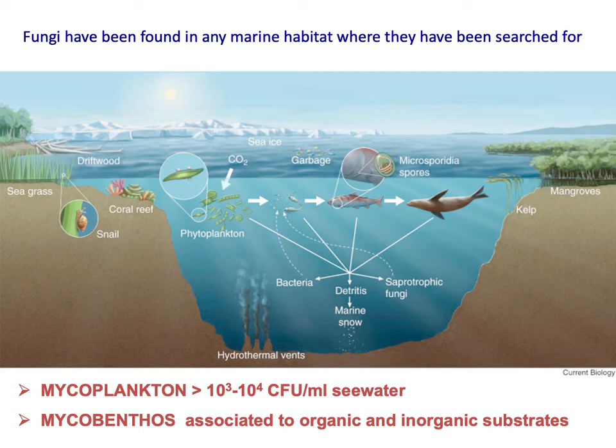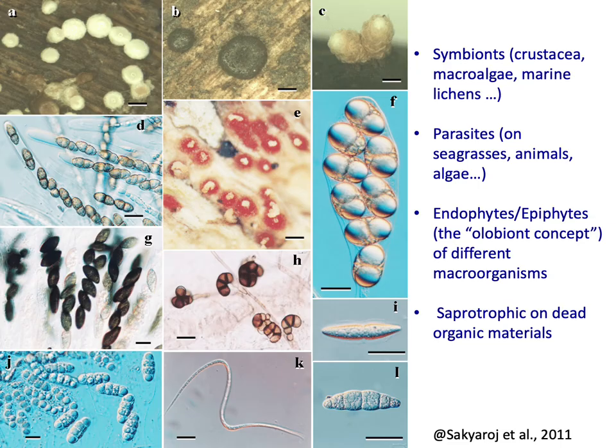They can be found as free organisms — the so-called mycoplankton — or associated with organic or inorganic substrates, the mycobenthos. Indeed, marine fungi encompass a wide range of lifestyles. They can behave as symbionts or parasites, and can be selectively associated as endophytes or epiphytes to different marine macro-organisms, and of course are able to grow as saprotrophs on different kinds of necromass.